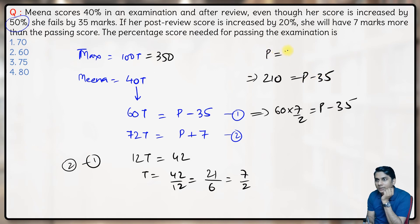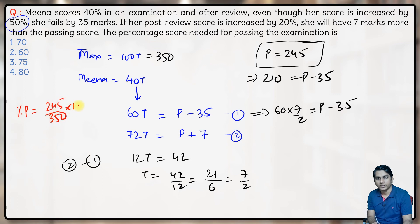So passing marks is 245 out of 350, that means percentage required for passing marks is 245 out of 350 into 100%. So this comes out to be 70%, hence the passing marks in the exam is 70%.